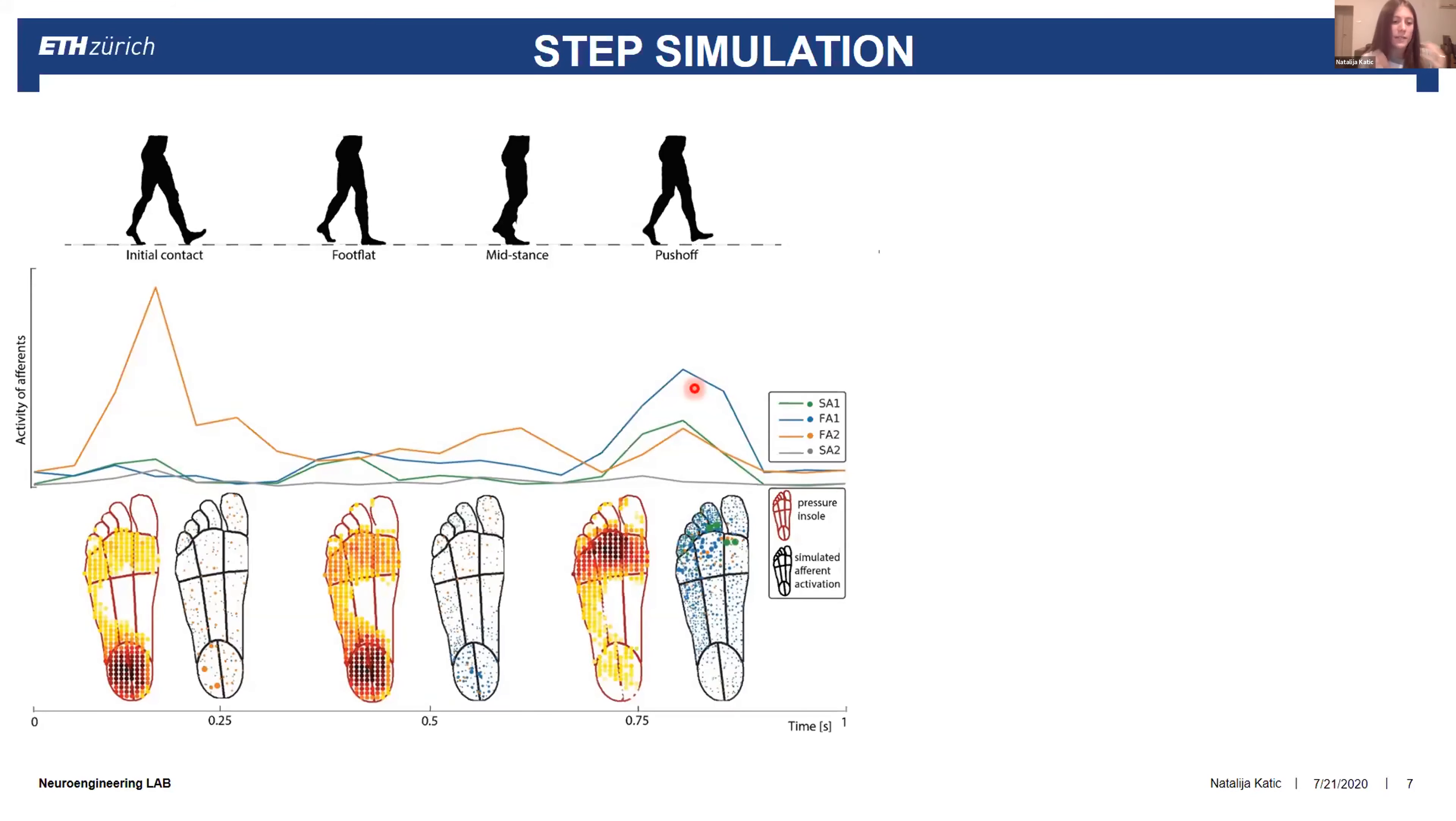Slowly adapting SA1s and SA2s participate more in postural regulation, especially SA1s that are mostly associated with maintaining contact of the foot on a support. This is why we have this activation during the foot flat and mid stance phase. And again, they have the highest density of afferents on the toes, which is why we have this peak. SA2s are characteristically the least sensitive and this is why the activation is really low during the whole gait cycle.